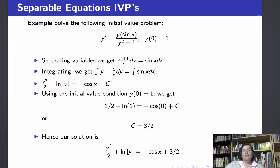Thus we have an equation in x and y for our solution: y squared over 2 plus the natural log of the absolute value of y equals minus cosine x plus 3 over 2. And here y is defined implicitly as a solution to this equation.